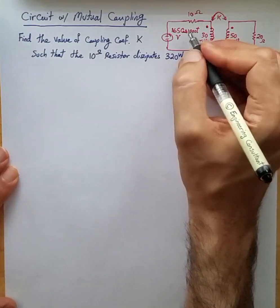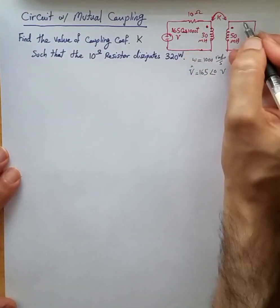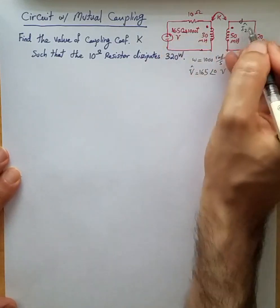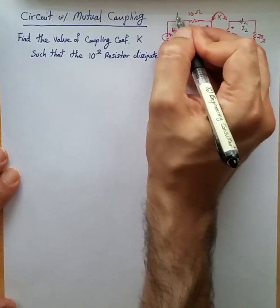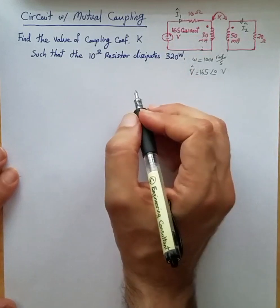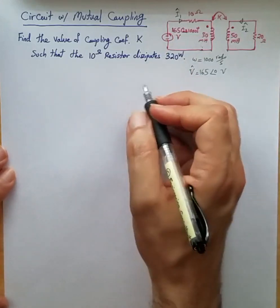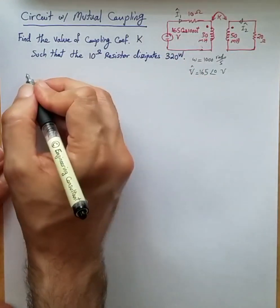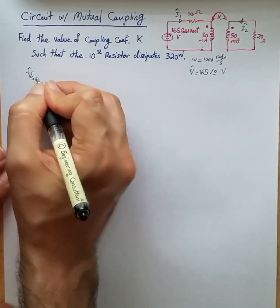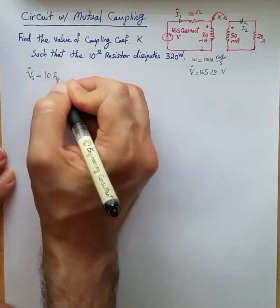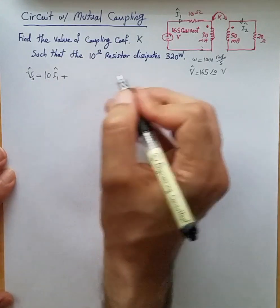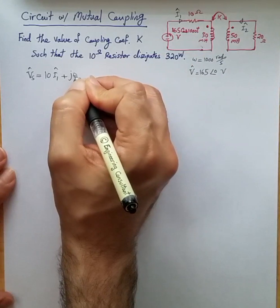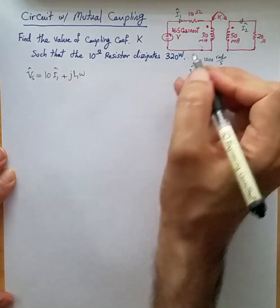First thing we need to do is find the current that is flowing through these two circuits. Let's assume current I2 in this second loop phasor is rotating this way, and current I1 is rotating clockwise. We can write KVL for these two loops. For the first loop, the input voltage source phasor equals 10 ohm times current I1 phasor plus